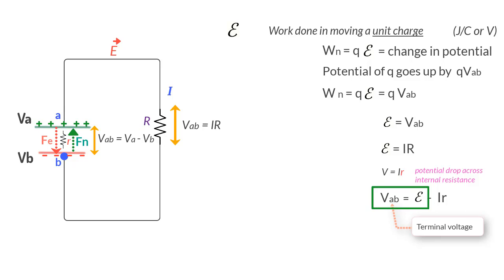But the moment current starts flowing, the terminal voltage reduces by an amount IR, where R is the internal resistance of the battery.